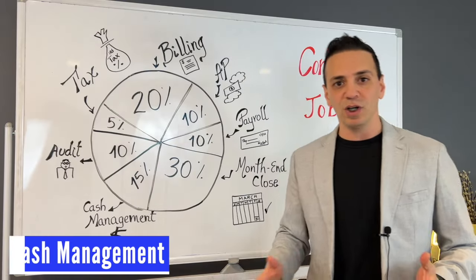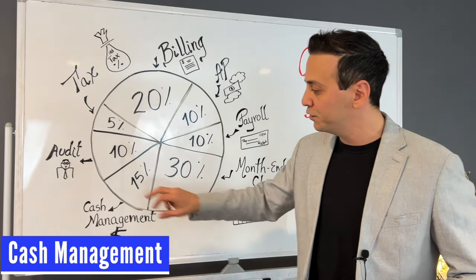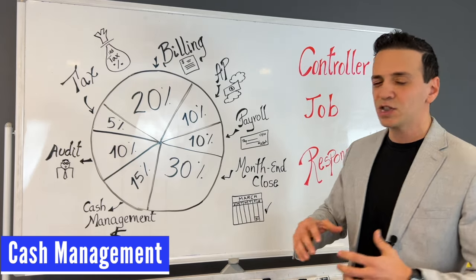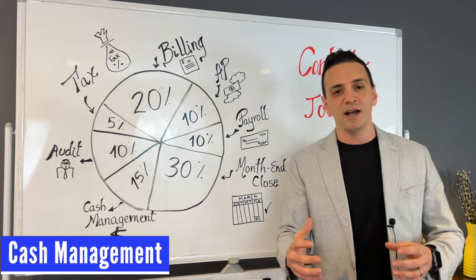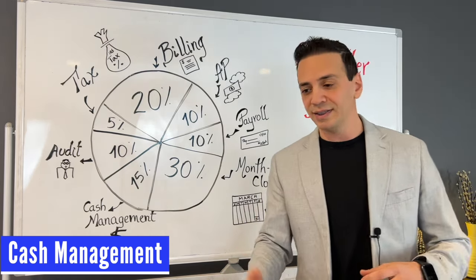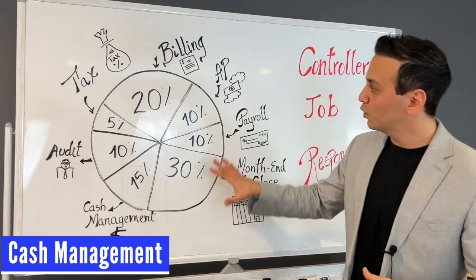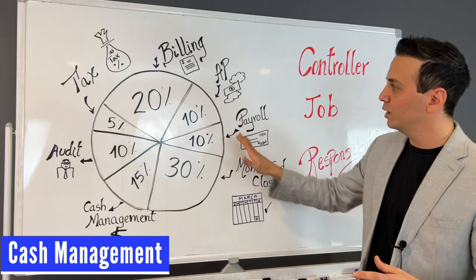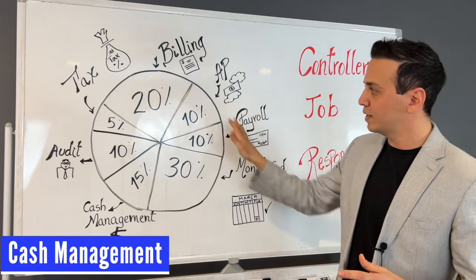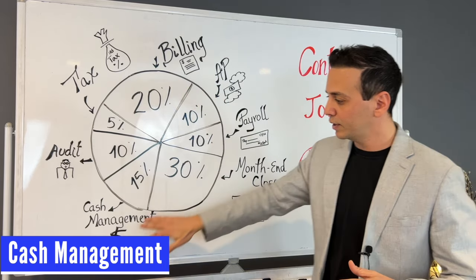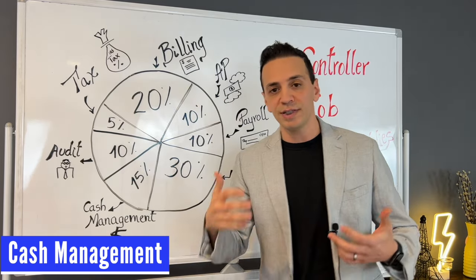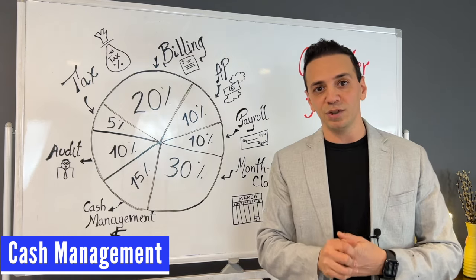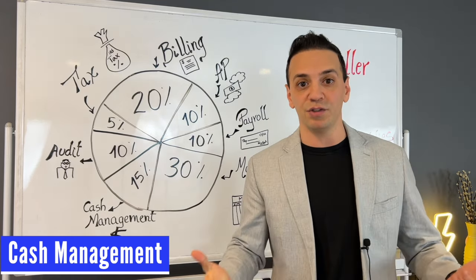The next area is cash management, which takes about 15% of my time. It's more of a strategic task — more of a forecast and more of an art than a science. Things like billing, accounts payable, and payroll are more transactional, whereas cash management is more strategic. With cash management, you can expect to work very closely with your CFO and the rest of the finance team.